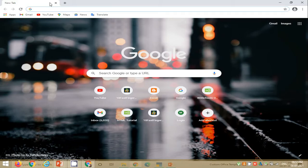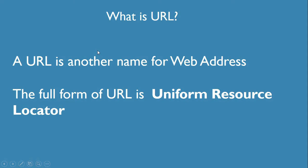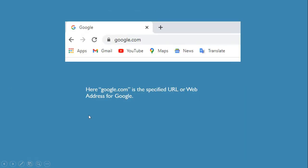Next we'll learn about web addresses and URLs. URL is another name for web address. There are different addresses for each and every website or web page, just like how our houses have different addresses. The full form of URL is Uniform Resource Locator. As you can see in the address bar, google.com is the specified URL or web address for Google.